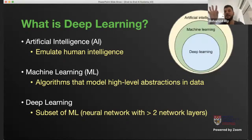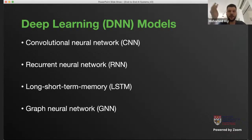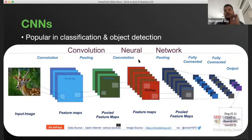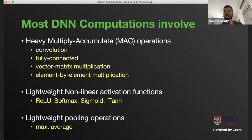Deep learning is a subset of machine learning, which is a subset of artificial intelligence. The most common models include convolutional neural networks, recurrent neural networks, long short-term memory networks, and graph neural networks. A convolutional neural network, which is most popular for image classification and object detection, takes an input image, performs convolution and pooling, then applies fully connected layers at the end to tell you whether what you have is a deer, a dog, or a cat.